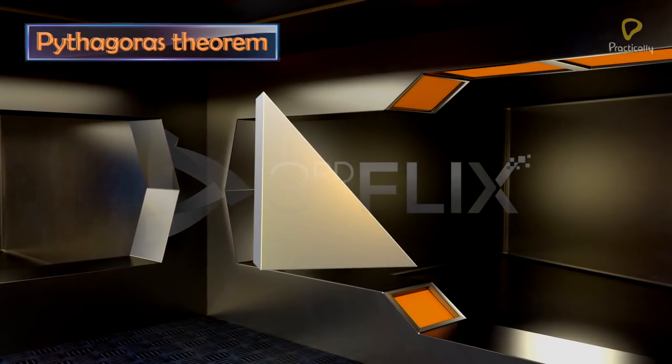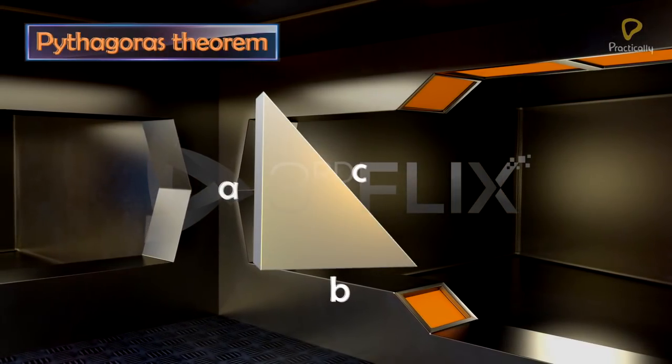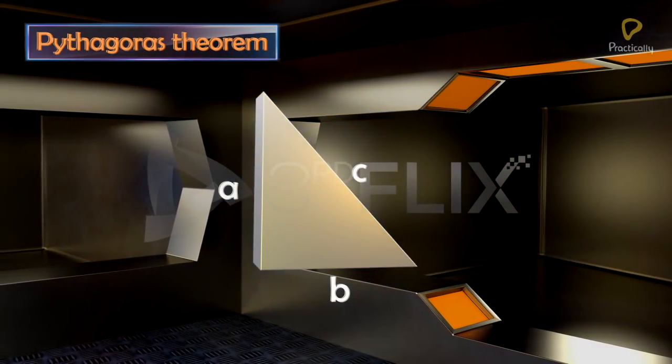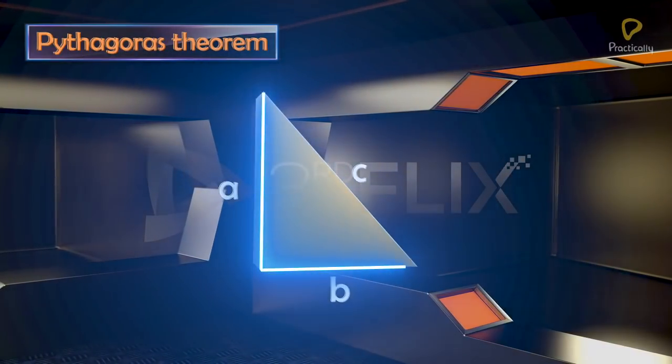Therefore, we can say that in a right-angled triangle, the square of the hypotenuse is equal to the sum of the squares of the other two sides.